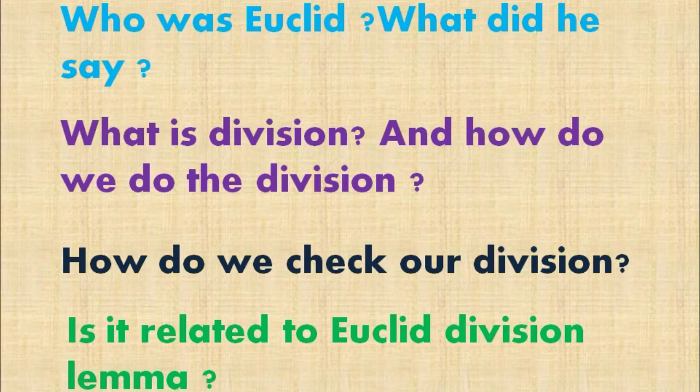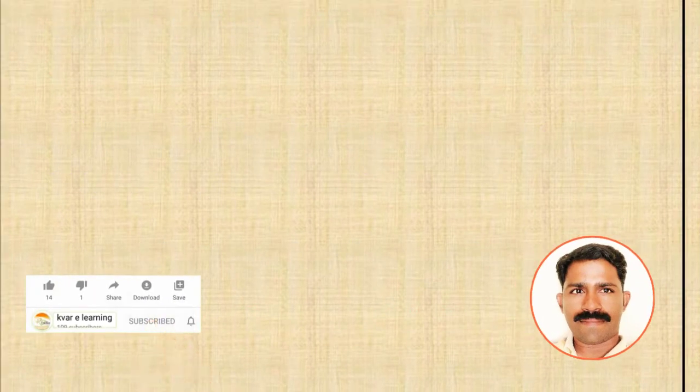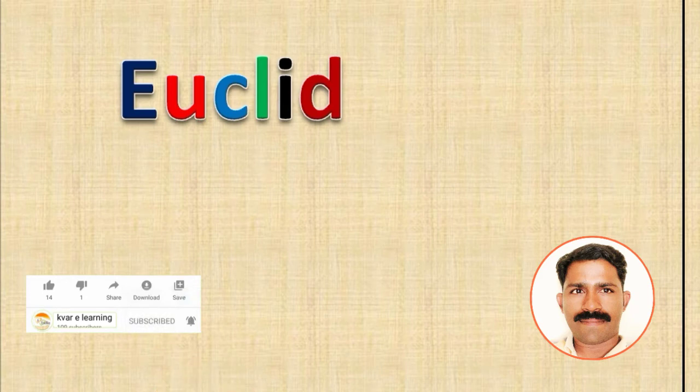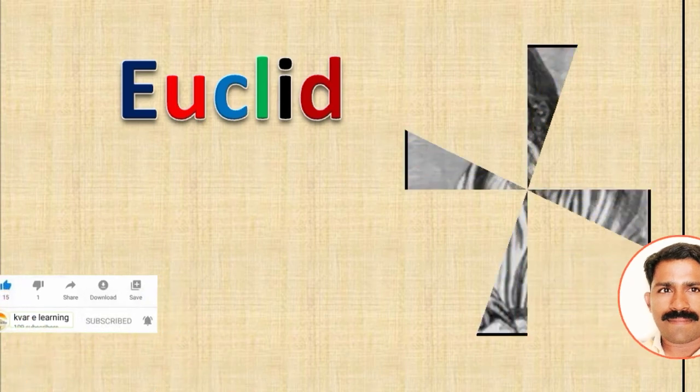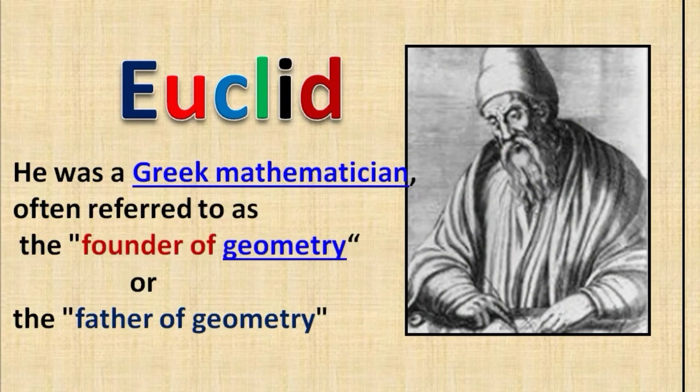First question: Who was Euclid and what did he say? Euclid was a Greek mathematician. He is known as the founder of geometry and the father of geometry.